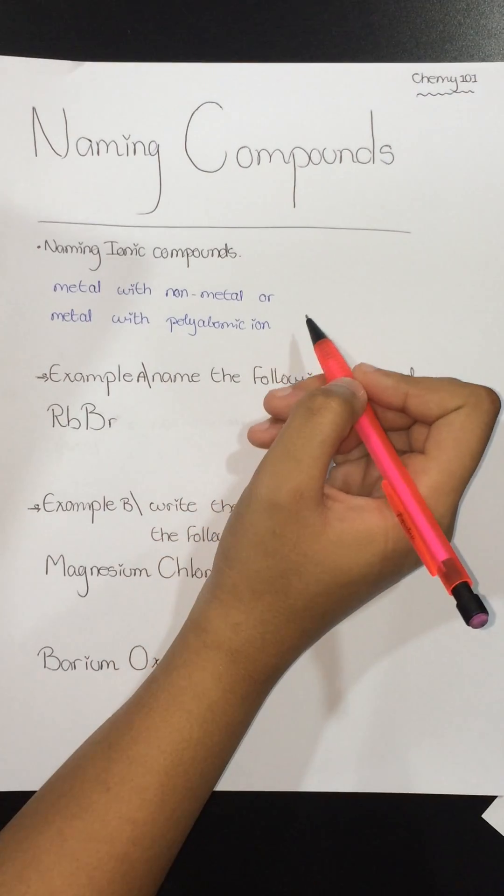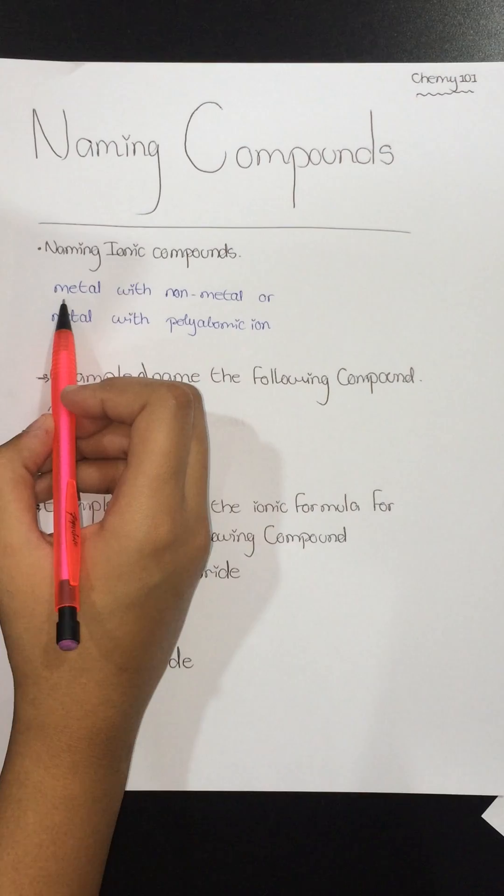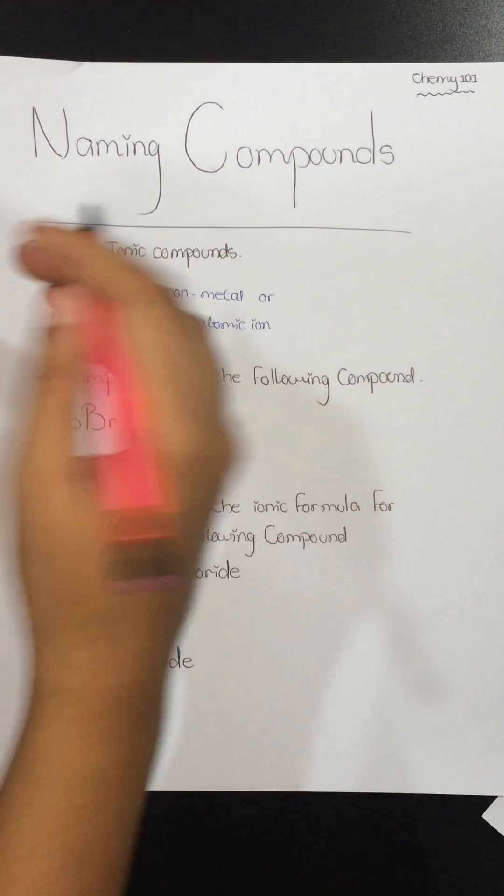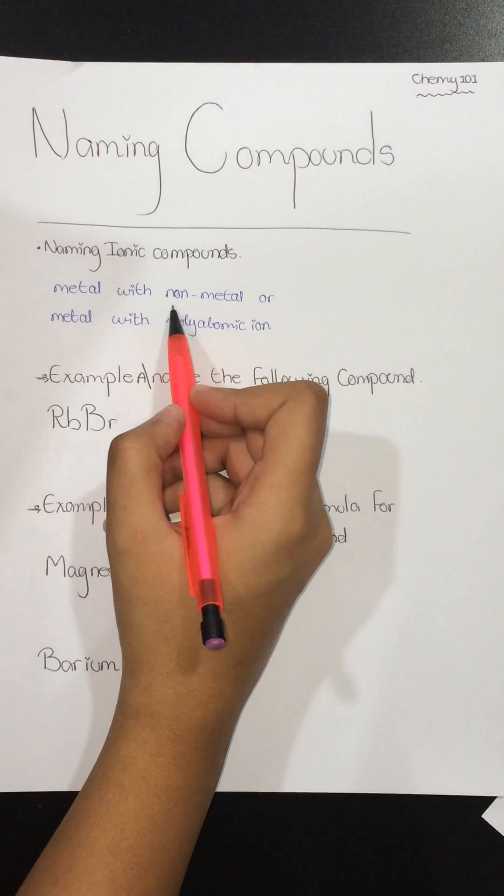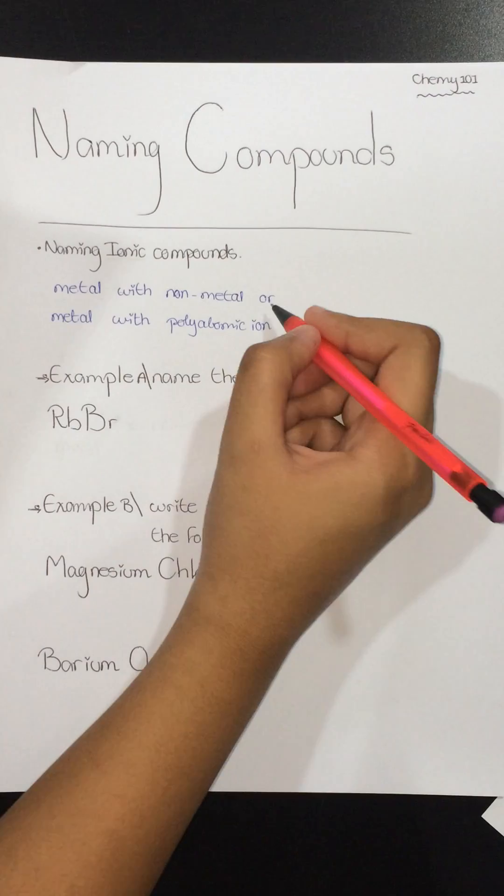When we come to naming, we should first identify the metal and write it as is without making any changes. Then the non-metal, and we add 'ide' at the end of the name.